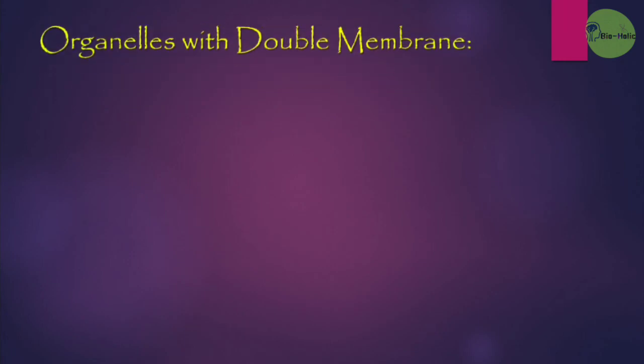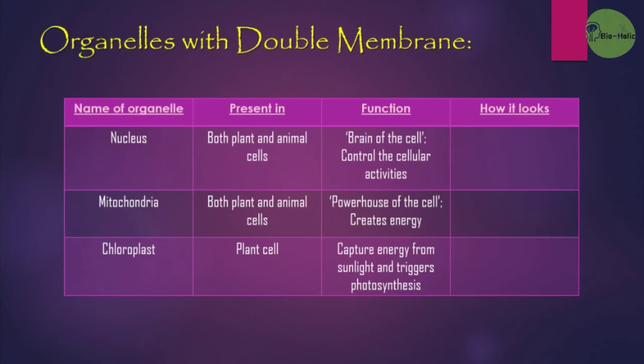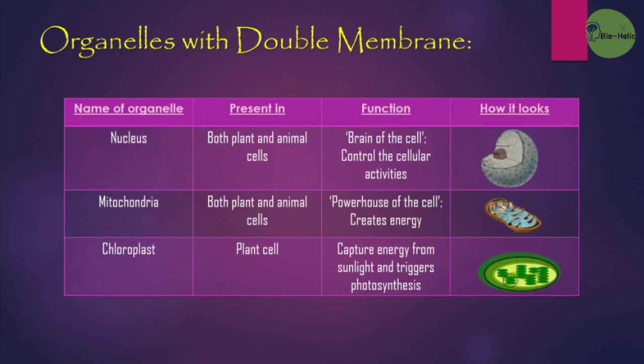Lastly, the organelles with double membrane: nucleus, mitochondria, and chloroplast. The nucleus is present in both plant and animal cells and is called the brain of the cell, as it controls cellular activities. The mitochondria, also present in both plant and animal cells, is called the powerhouse of the cell and creates energy. The chloroplast is present only in plant cells; it captures energy from sunlight and triggers photosynthesis, and is therefore present only in photosynthetic plants.